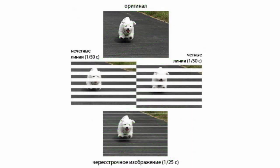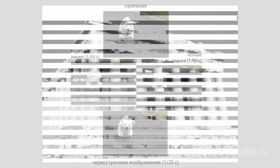Odd-numbered lines are displayed in the first field and even-numbered lines are displayed in the second field. Therefore, a frame is divided into two half frames consisting of even-numbered and odd-numbered lines. Every half frame is called a field.